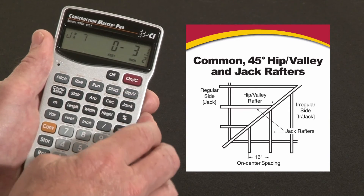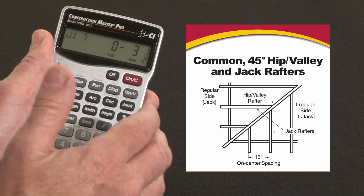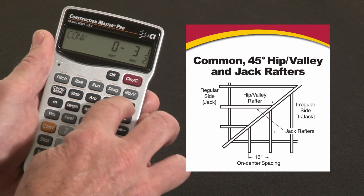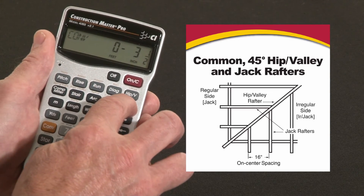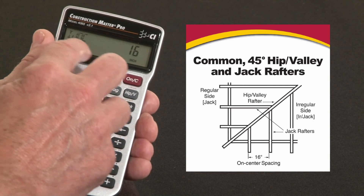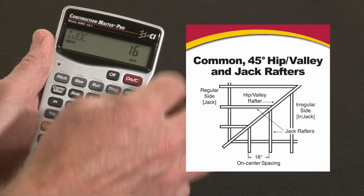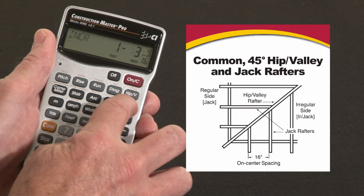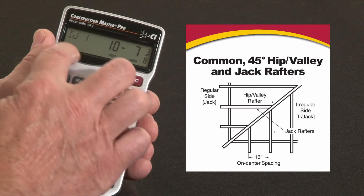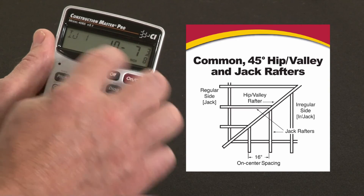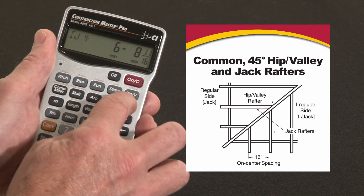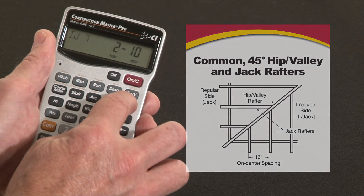To get the lengths of the irregular side jack rafters, I hit Convert, and over the jack key it says irregular jacks. When I press the jack key, it shows the irregular jack on-center spacing — the same 16 inches we're using. Press it again, there's the increment of change. Then it'll start with irregular jack number 1 on down to the corner, giving the length of every single one of those jacks.